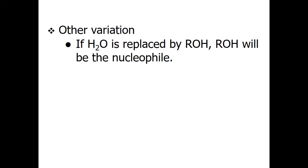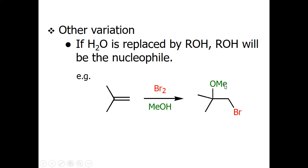In another variation, if we replace water with an alcohol, the alcohol serves as the nucleophile and gives an ether instead of a hydroxyl group. For example, with 2-methylpropene and bromine in methanol, bromine is first added generating the carbocation, then methanol attacks as a nucleophile to give the ether compound.